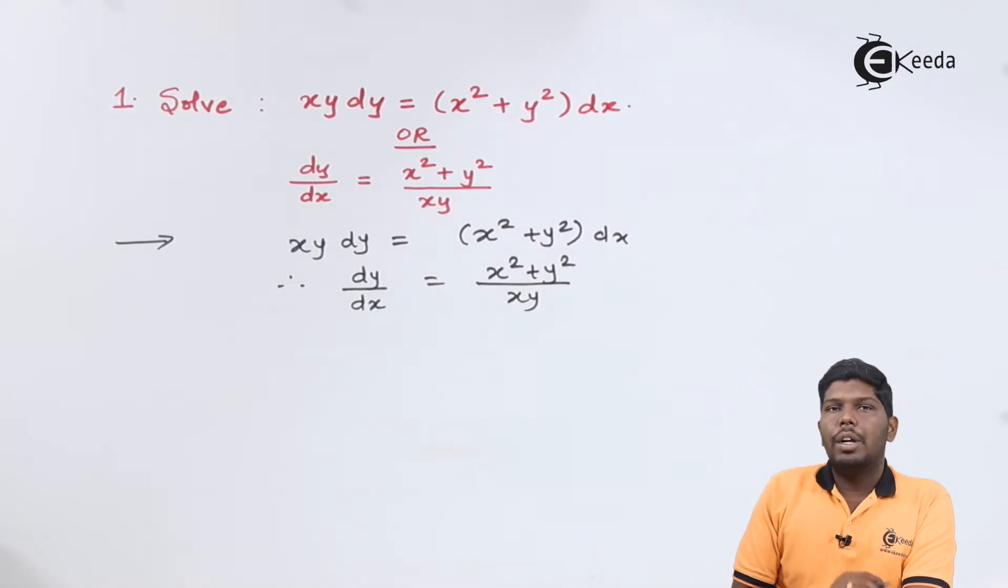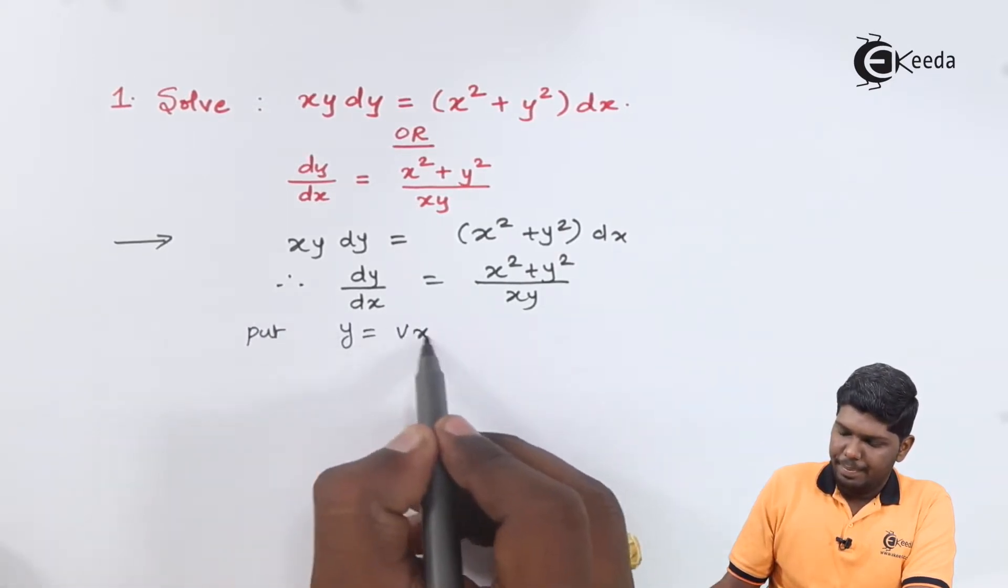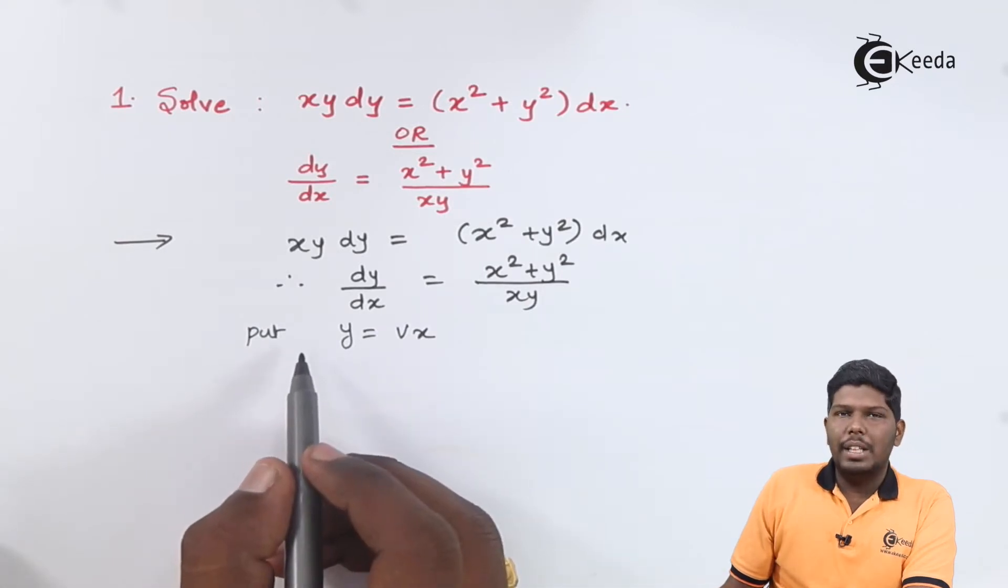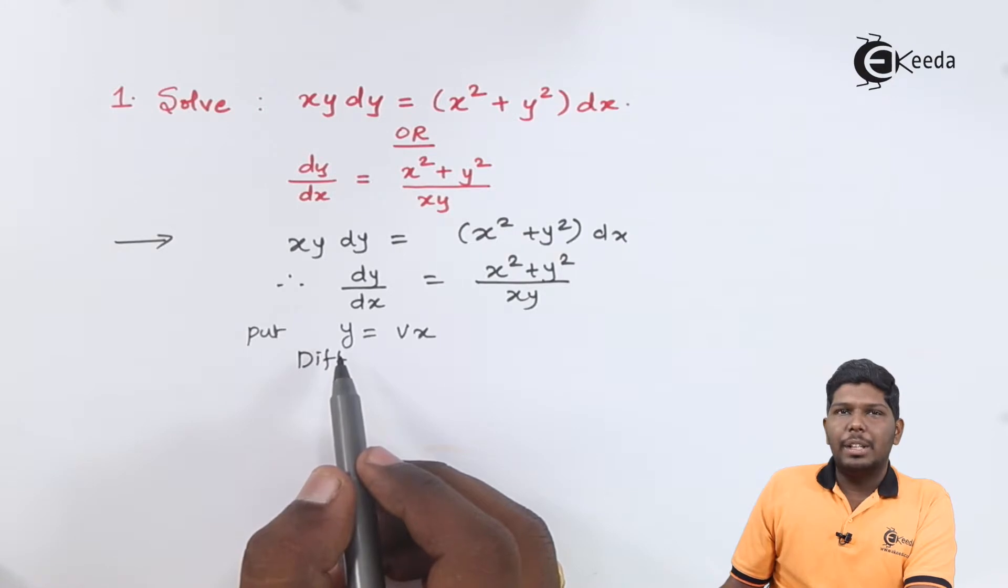After getting the value of dy/dx, the next substitution will be put y = vx, and then differentiate with respect to x.